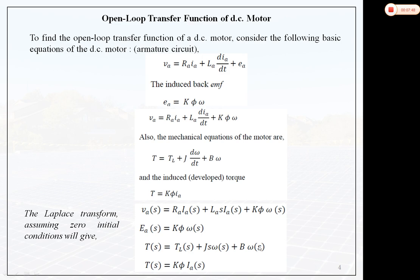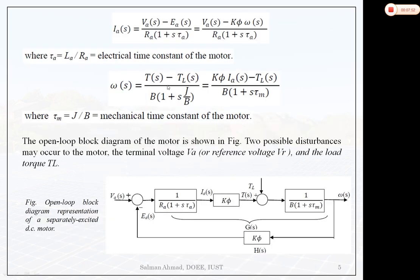From the torque and mechanical equations, we can derive: Ω(s) = [T(s) − TL(s)] / [B·(1 + s·τm)], where τm = J/B is the mechanical time constant of the motor. So τa is the electrical time constant and τm is the mechanical time constant.